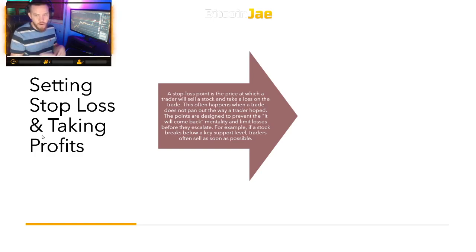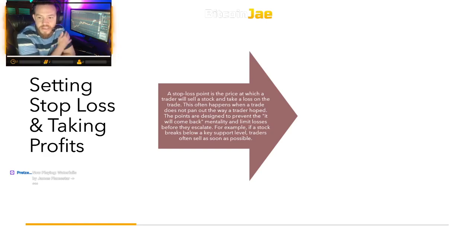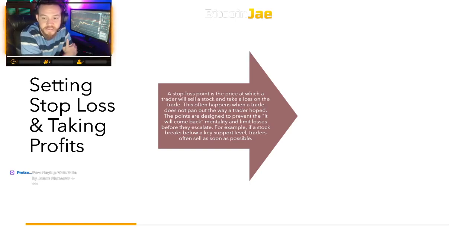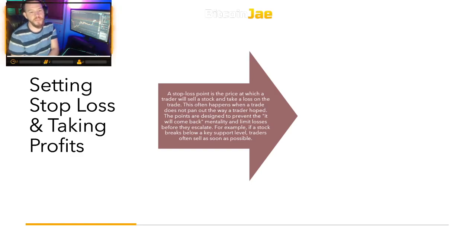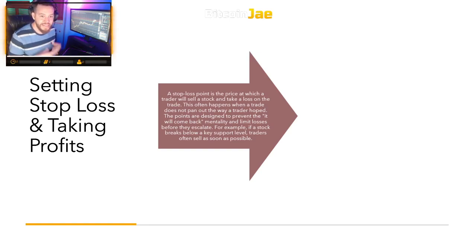A stop-loss point is the price at which a trader will sell a stock and take a loss on the trade. This often happens when a trade does not pan out the way a trader hoped. Stop-loss points are designed to prevent the 'it will come back' mentality and limit losses before they escalate. For example, if a stock breaks down a key support level, traders often sell as soon as possible. You want to minimize your losses and maximize your winners. If a trade's not going your way, just take the loss, accept it, and move on — you'll get the next one.